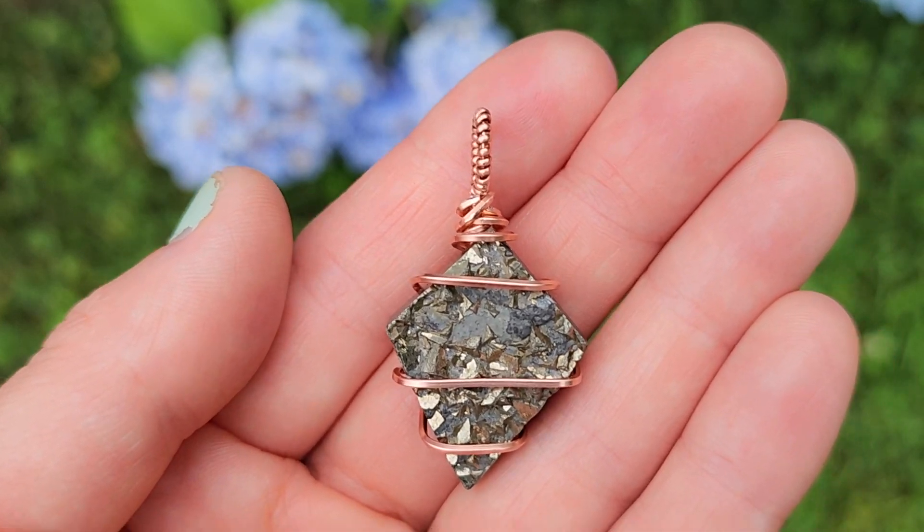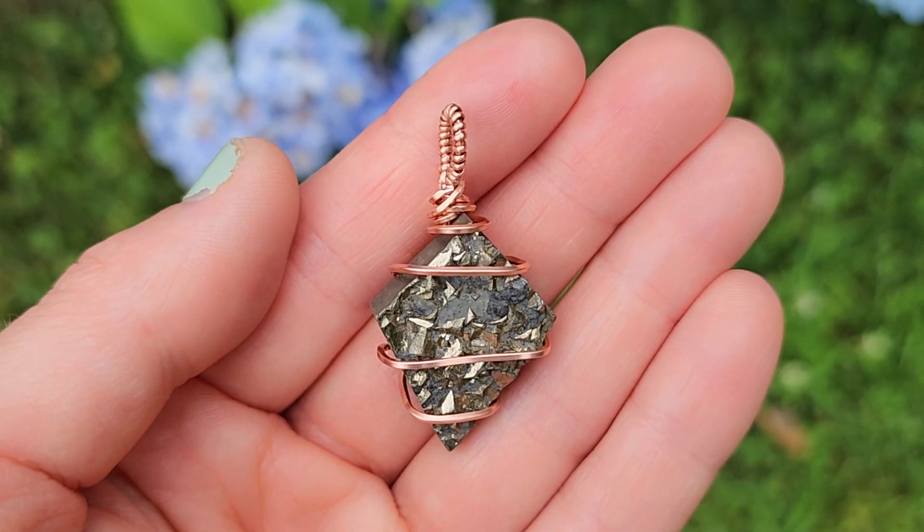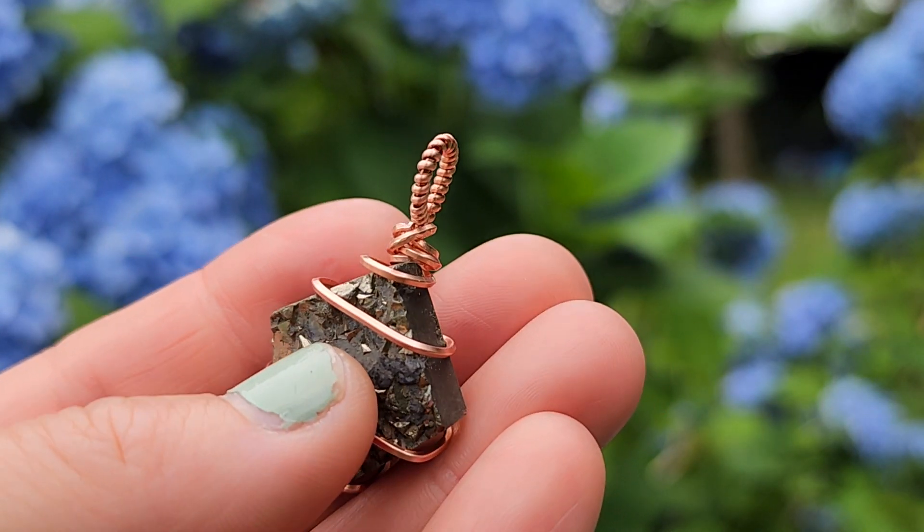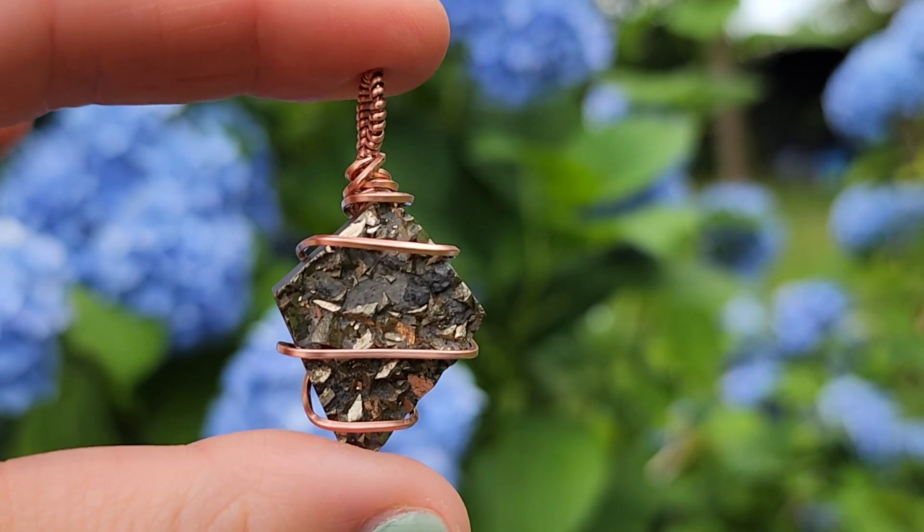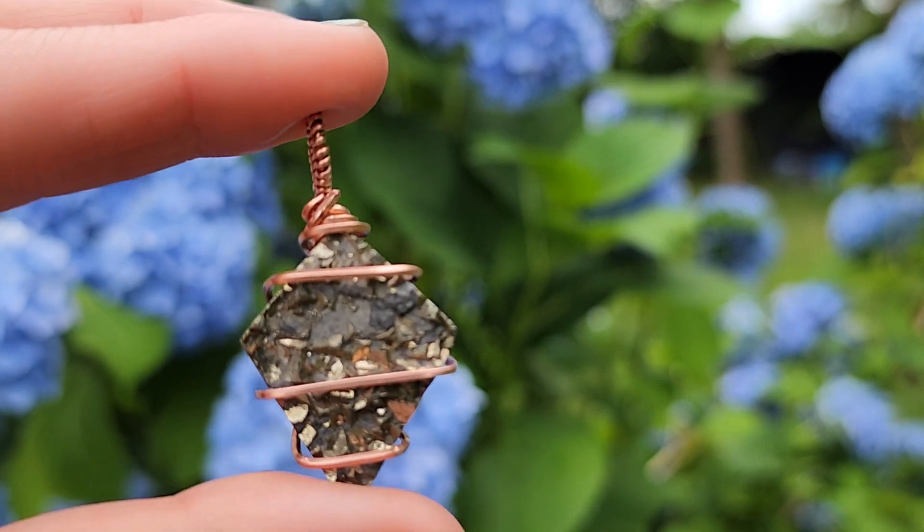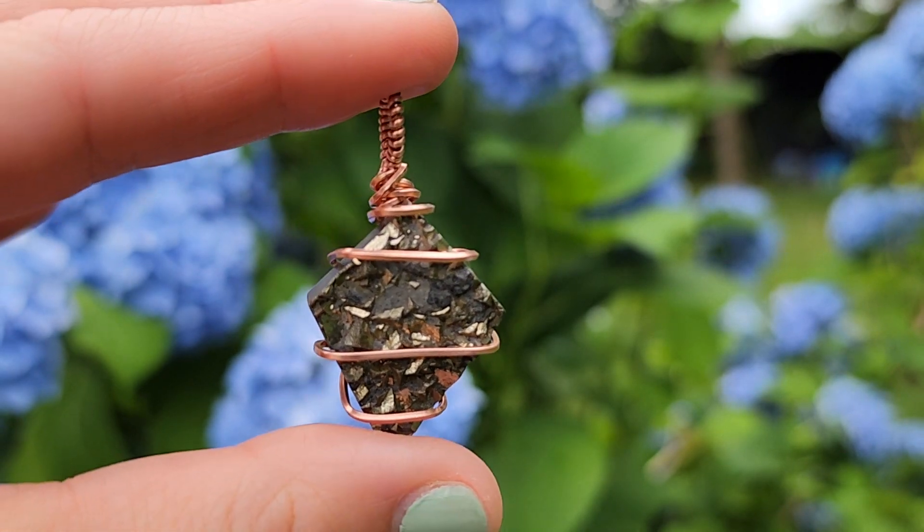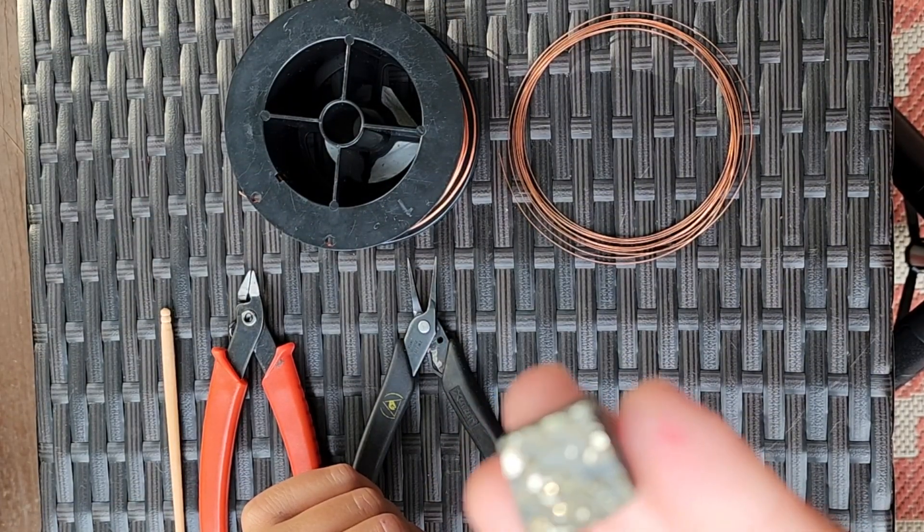Hi everyone, for this video we're going to do a simple caged wire wrap with an emphasis on this wrapped bail technique. We are going to use a simple pyrite stone, but you can use whatever stone you have. It's best to use a stone with an irregular shape with some jagged edges to anchor the simple caged wire wrap technique around.